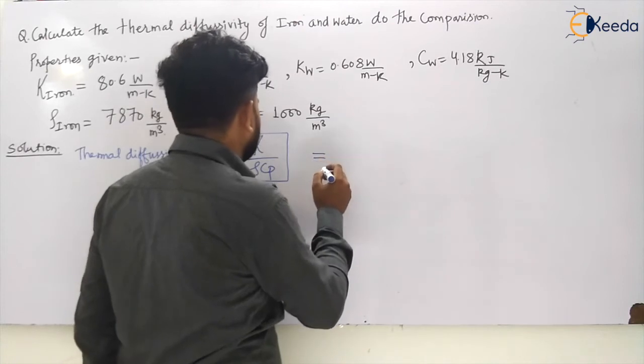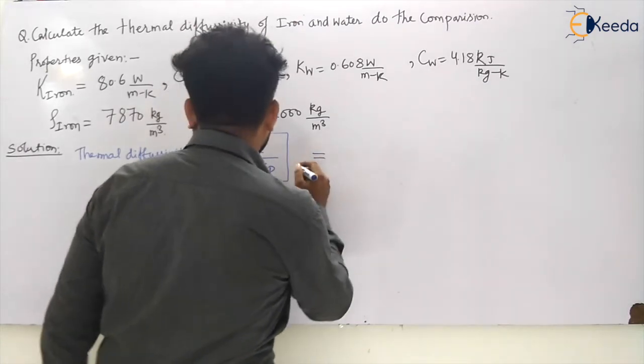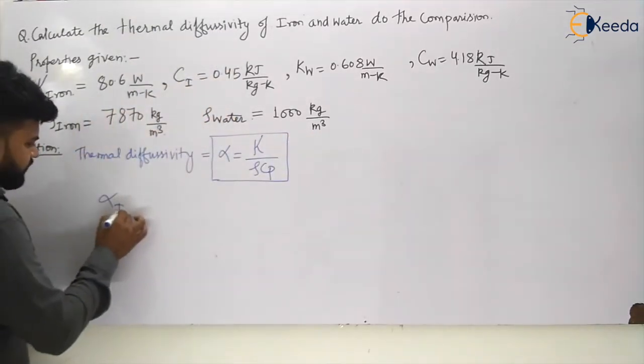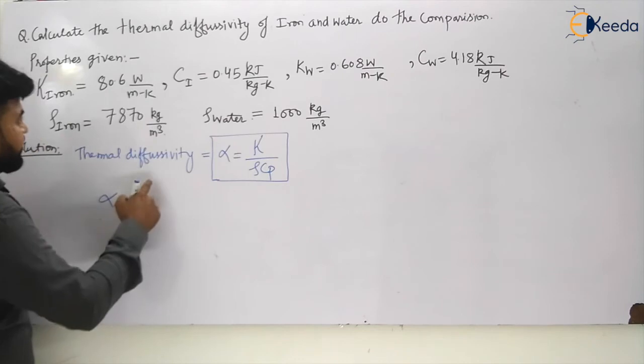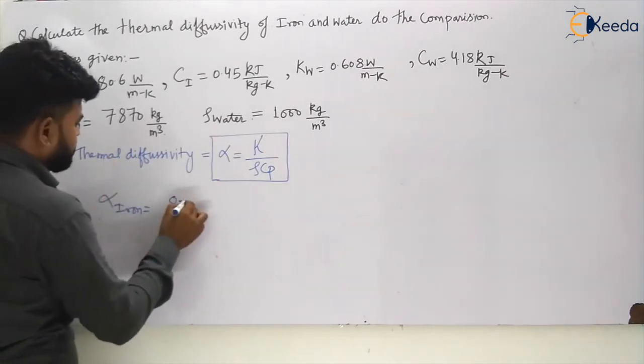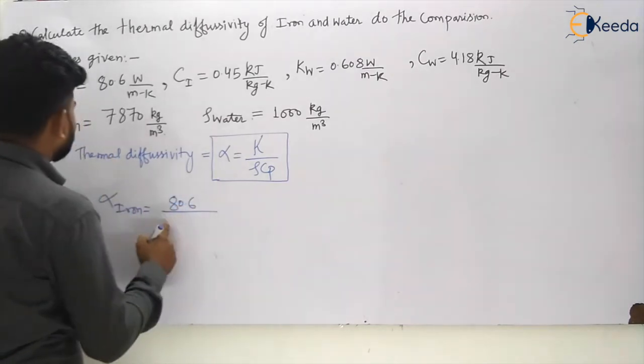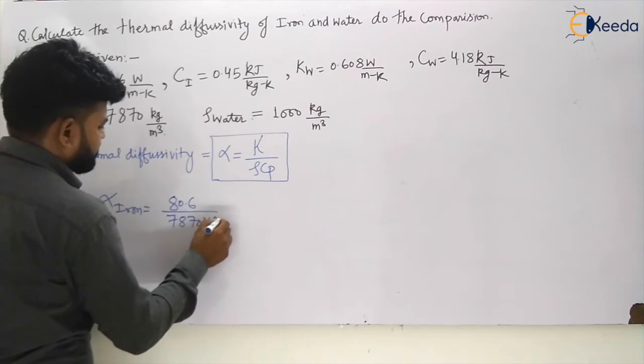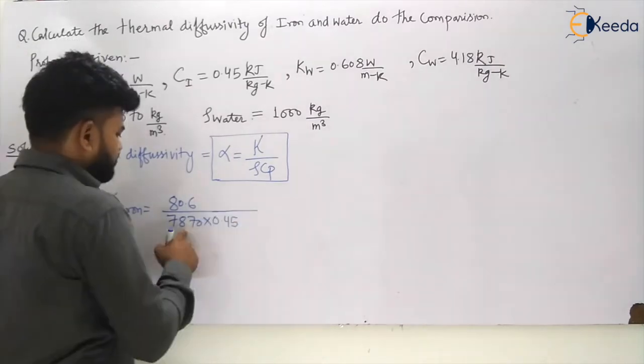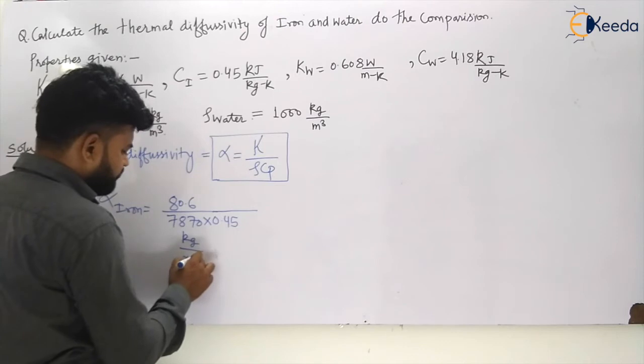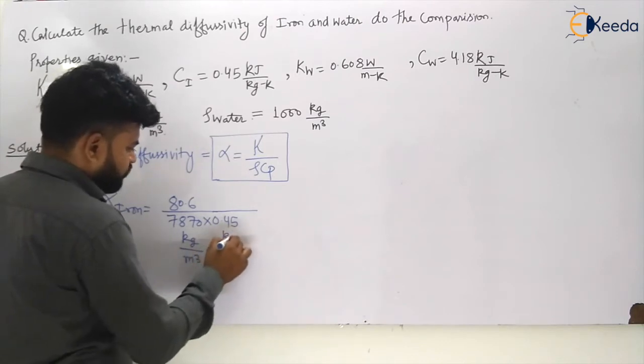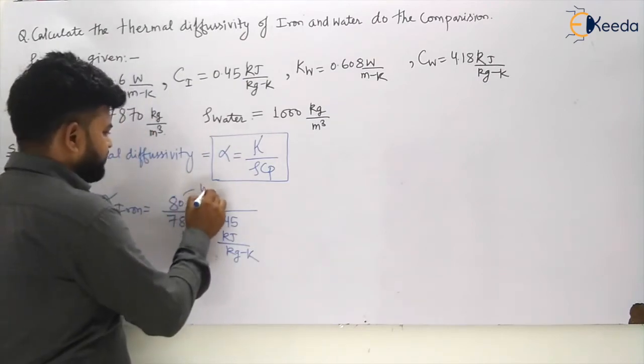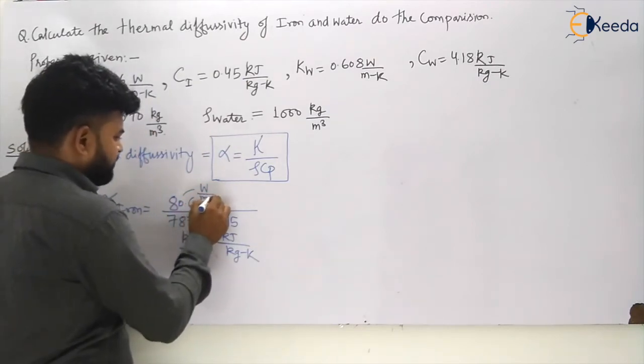So let us calculate for iron first. Alpha iron will become conductivity of iron which is 80.6 divided by rho cp. Rho is 7870 into the cp of iron is 0.45. This is in kg per meter cube, this is in kilojoule per kg Kelvin, and this is your conductivity which is watt per meter Kelvin.